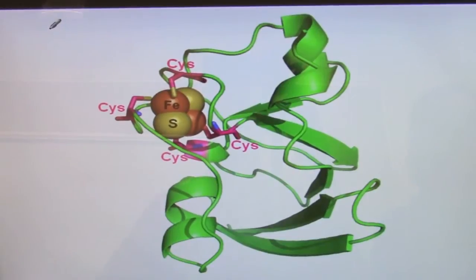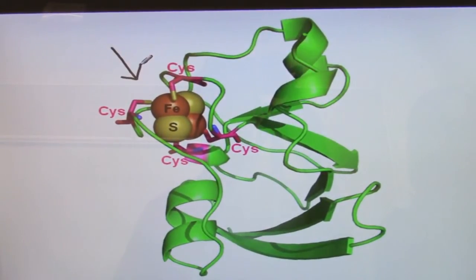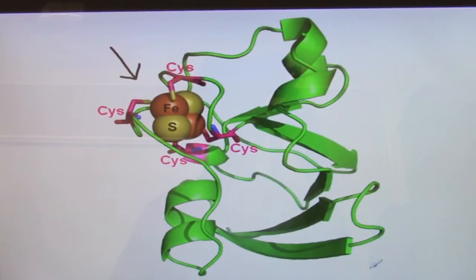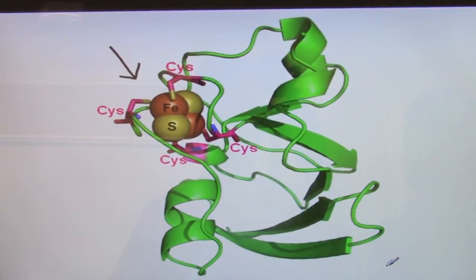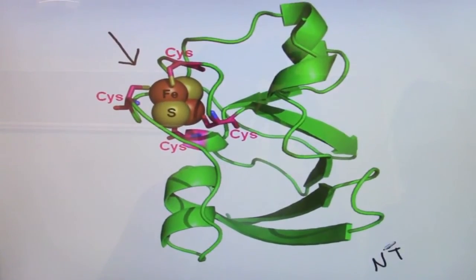Ferrodoxin is comprised of iron-sulfur complexes, as shown here, with two structural domains. These two domains are comprised of an antiparallel beta-barrel sheet located at the amino terminus of the protein, here indicated by the abbreviation NT.